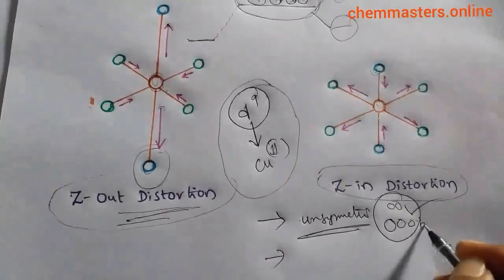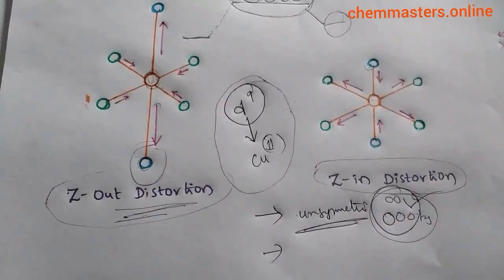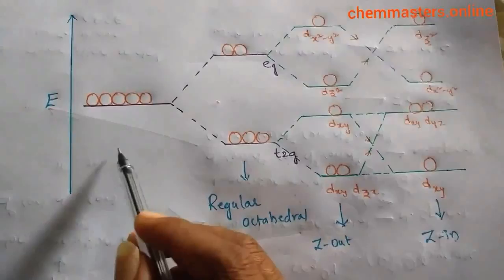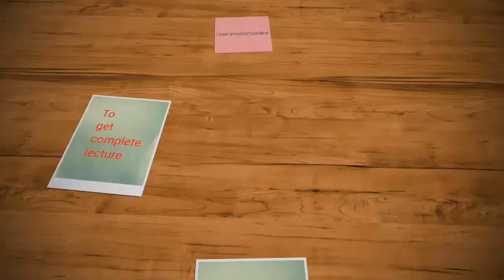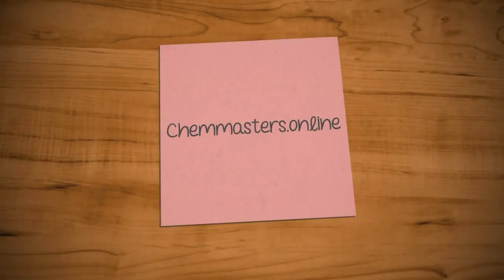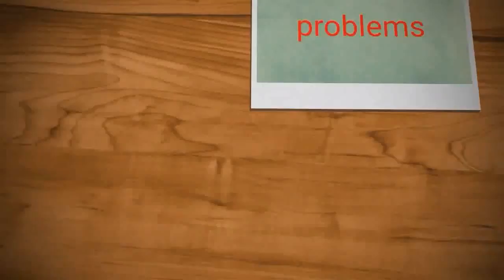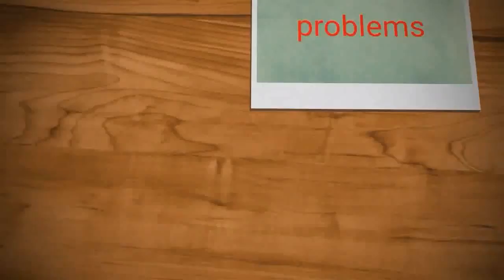If electrons are arranged symmetrically in the T2G and EG levels of octahedral complexes, there is no chance of distortion. This point you should remember. So look here — this is the regular octahedral arrangement.